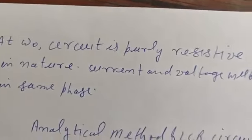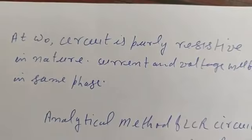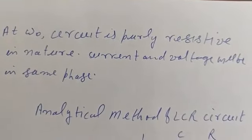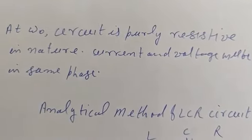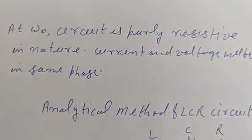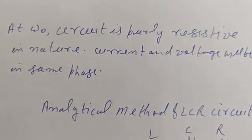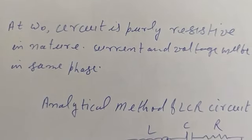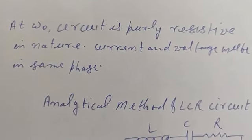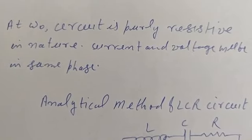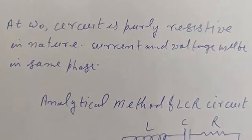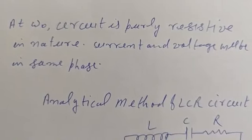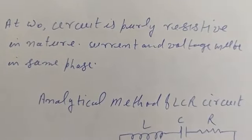At ω₀, the circuit is purely resistive because there is no role of L and C. ωL and 1/ωC cancel each other, so their net effective voltage is zero. Opposition is offered only due to resistance, making the circuit purely resistive in nature. Because it is purely resistive, current and voltage will both be in the same phase — the phase difference becomes zero.